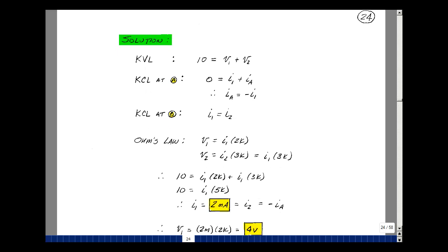So here's my first equation. V1 plus V2 is 10. I sub a is equal to minus I1. I2 is equal to I1. V1 is equal to I1 times 2k. And then V2 is I2 times 3k, but I2 is equal to I1.